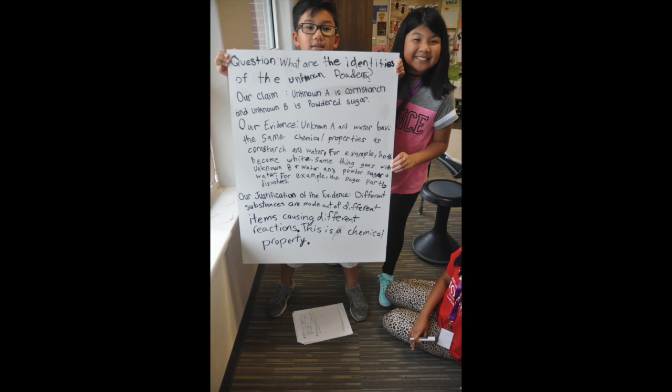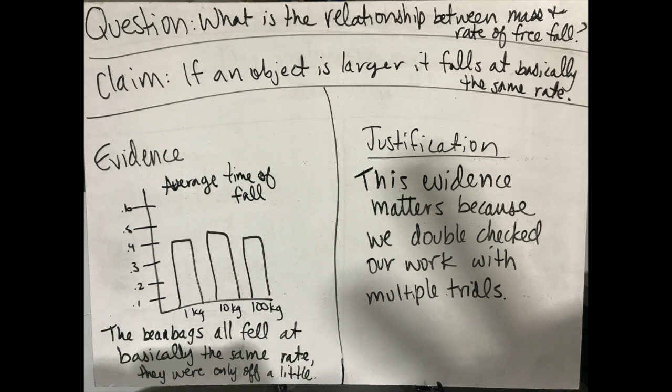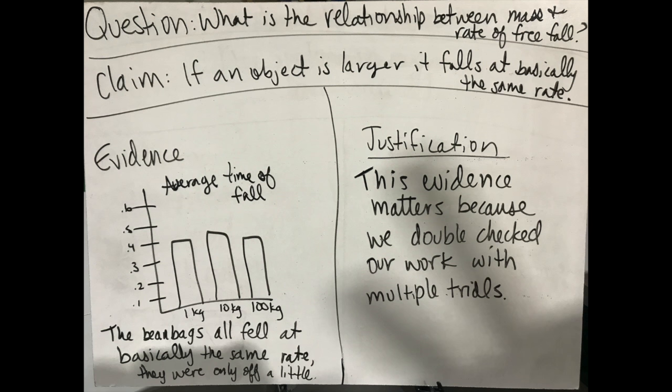Student whiteboards tend to follow a progression. When they first start out, they will give you a claim and some evidence, but the justification will often be something vague and unrelated to the work they've been doing. One of my students once wrote, 'our evidence is important because it's evidence' on a beginning whiteboard.